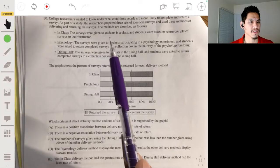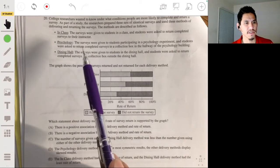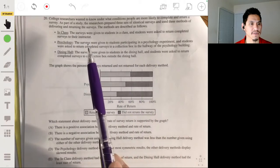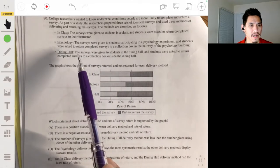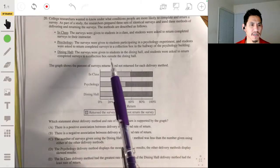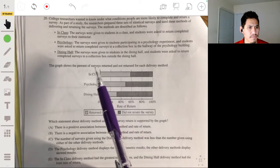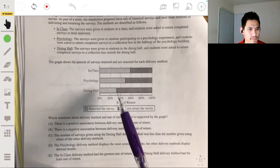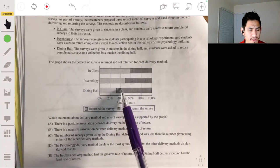In class, the surveys were given to students in a class and students were asked to return completed surveys to their instructor. Psychology: the surveys were given to students participating in a psychology experiment and students were asked to return completed surveys to the collection box in the hallway of the psychology building. And in dining hall, the surveys were given to students in a dining hall and students were asked to return completed surveys to the collection box outside the dining hall. Okay, so this showed the percent of surveys returned and not returned for each delivery method. So it looks like the in class ones have the highest rate of return. Dining hall has the least.